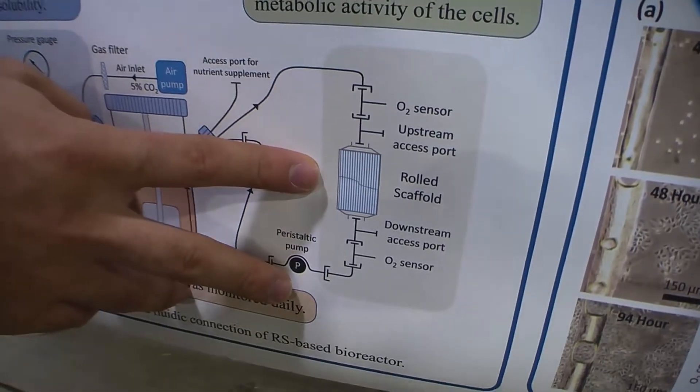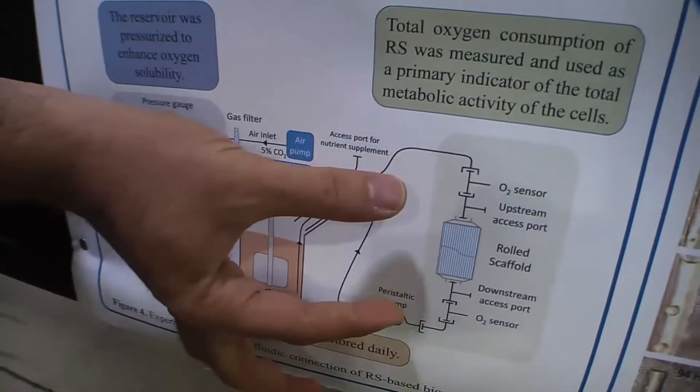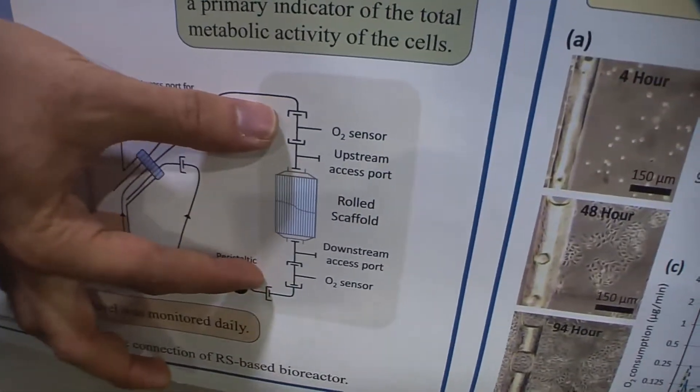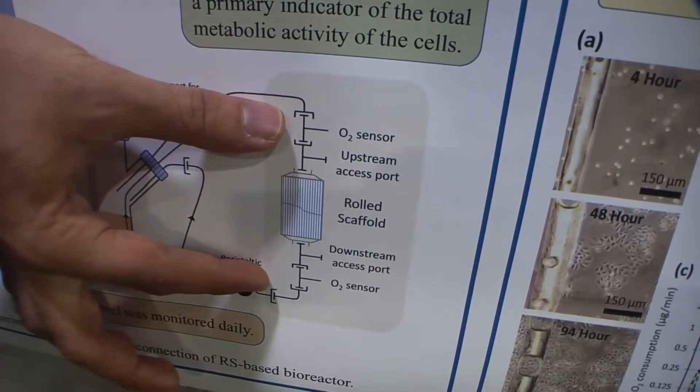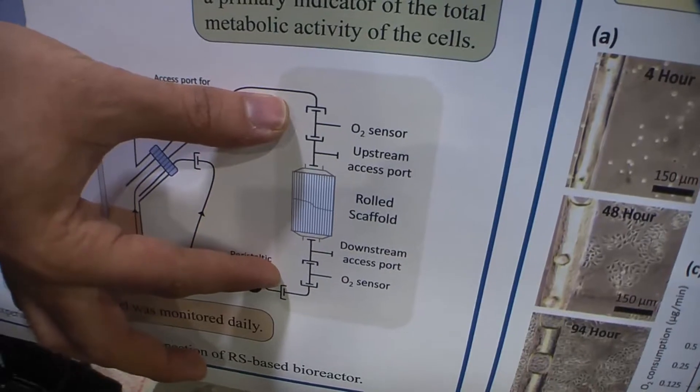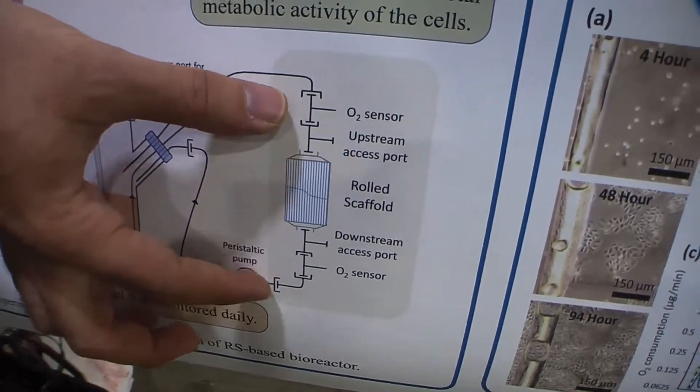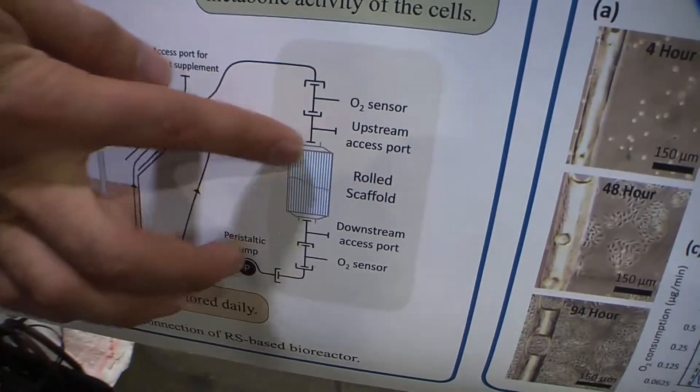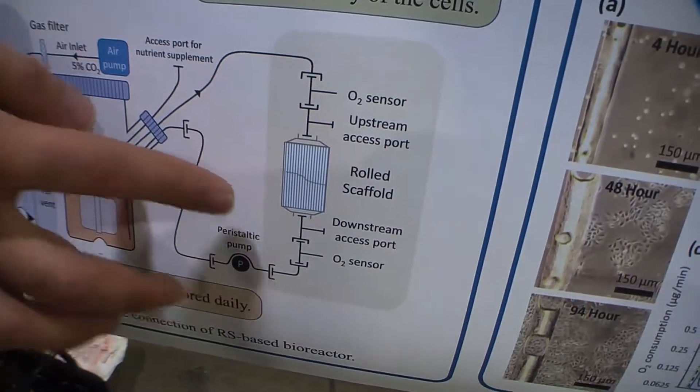To monitor the metabolic activity of the cells, we put two oxygen sensors on either side of the Roll the Scaffold, which measure the dissolved oxygen concentration. By knowing the difference of these two values, we know how much oxygen the cells in the Roll the Scaffold are consuming.